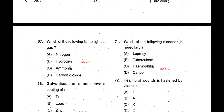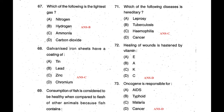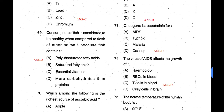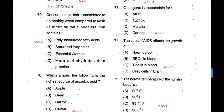Question 71: Which of the following diseases is hereditary? Hereditary means passing from parents to children — the answer is hemophilia, correct answer is C. Question 72: Healing of a wound is hastened by which vitamin? To heal a wound, vitamin C is required — correct answer is D. Question 73: Oncogene is responsible for cancer — oncology is the study of cancer — answer is D. Question 74: The virus of AIDS affects the growth of T cells in the blood — correct answer is C.